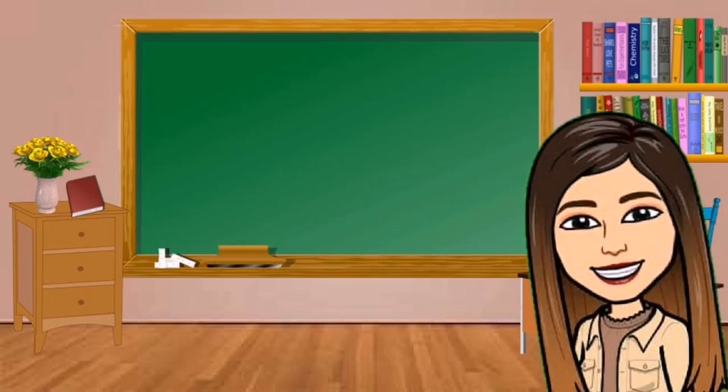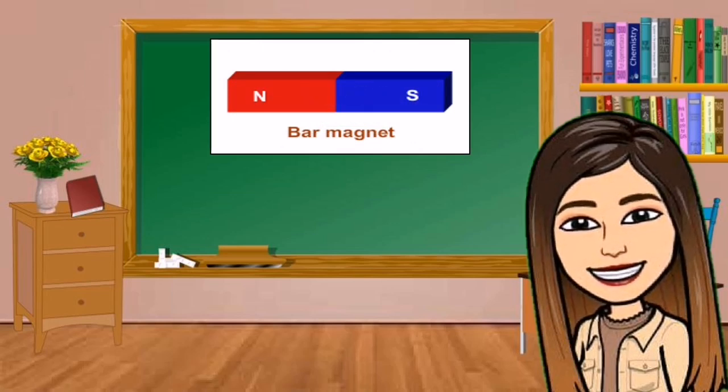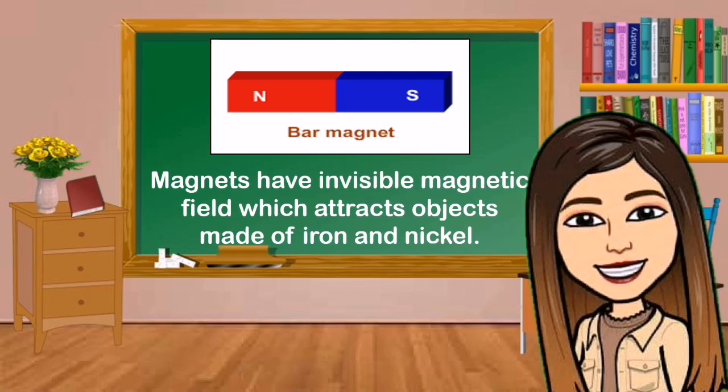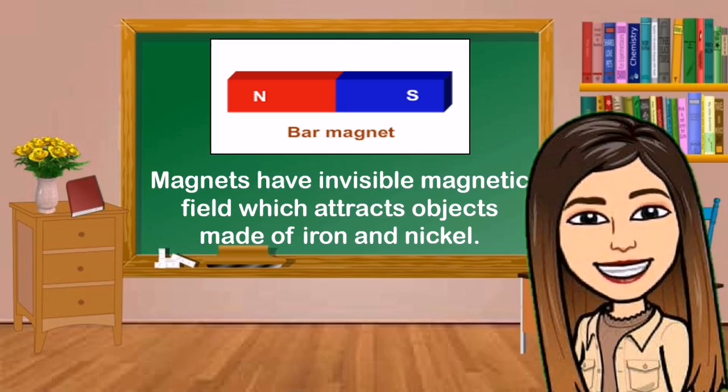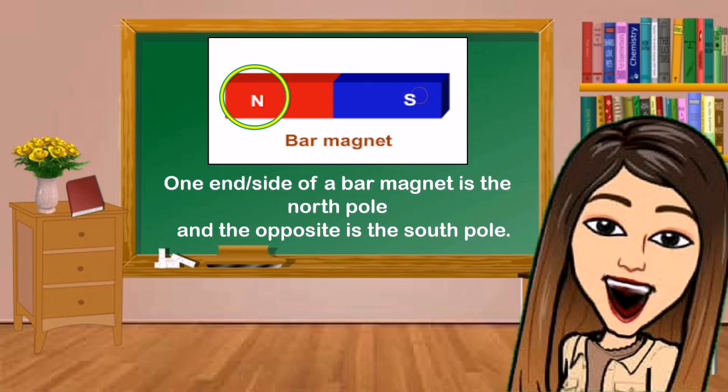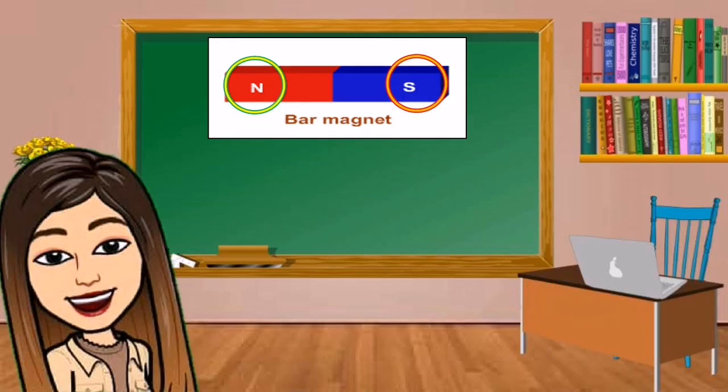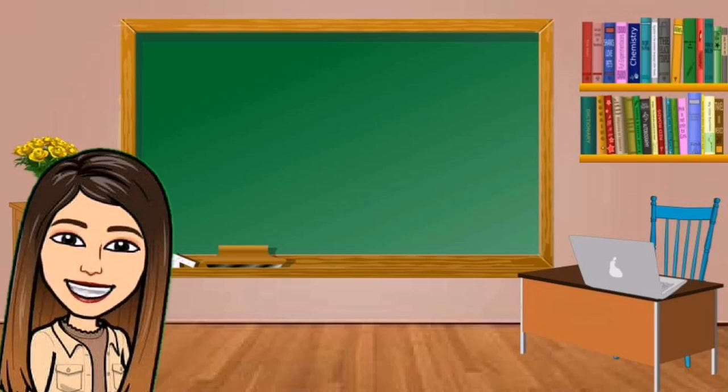Have you seen a magnet? What can you say about it? Magnets have invisible magnetic field which attracts objects made of iron and nickel. One end or side of a magnet is the north pole and the opposite is the south pole. When the poles of two magnets are put near each other, they have the force that will either pull them together or push them apart. What do we call the push and pull of magnet?